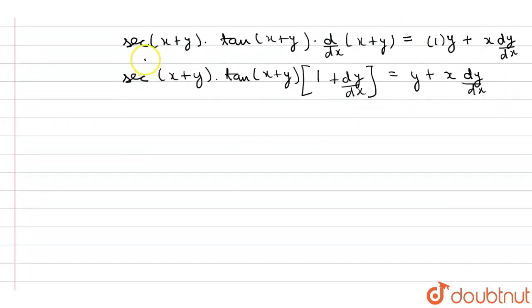So now opening the brackets, we will get sec of x plus y times tan of x plus y plus dy by dx taking common from this and this. We will get dy by dx...